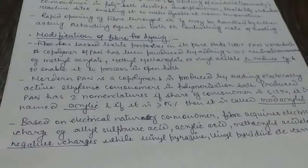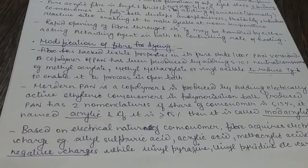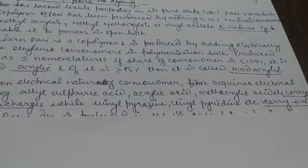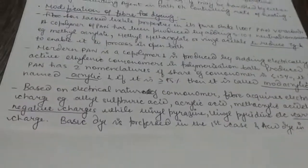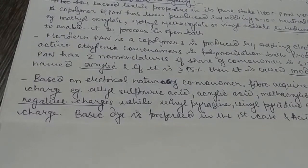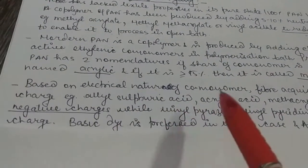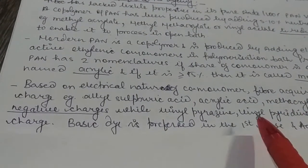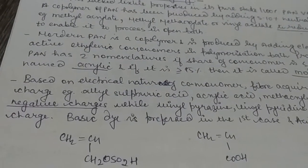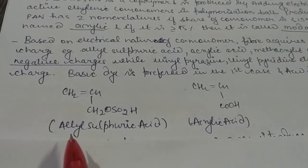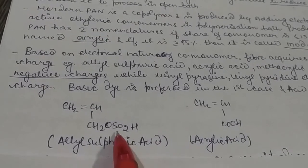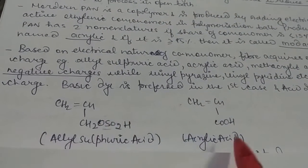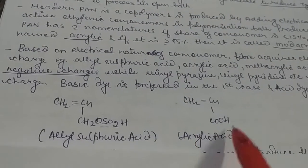Based on the electrical nature of the co-monomer, the fiber acquires electrical charges. Co-monomers such as itaconic acid (li-sulfuric acid), acrylic acid, and methacrylic acid carry negative charges, while vinylpyridine carries positive charges. When we introduce negative charges on acrylic fiber by adding these anionic co-monomers, basic dye is preferable. If we add a co-monomer that introduces cationic charges on the fiber, then acid dye is preferable. The chemical structures of these co-monomers show SO₃ groups (negative) and COOH groups (giving COO⁻ ions) introduced into the fiber structure.